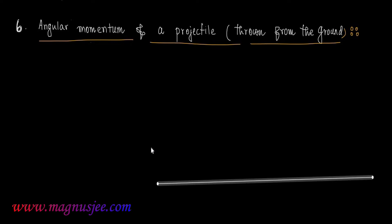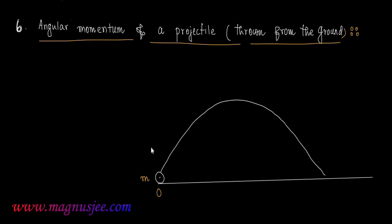This is the angular momentum of a projectile thrown from the ground. The projectile is thrown from point O and describes a parabolic trajectory, striking the ground at point B with velocity v prime, which is equal to the velocity of projection u. The projectile is thrown with initial velocity u at an angle theta with the ground.